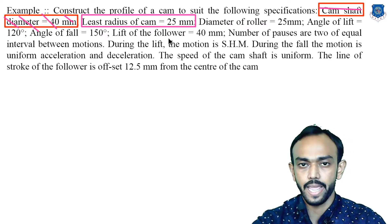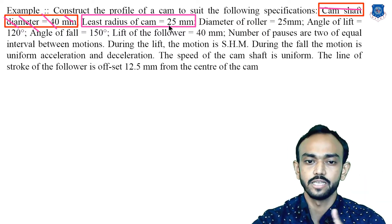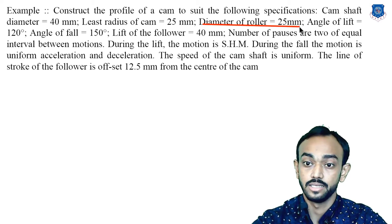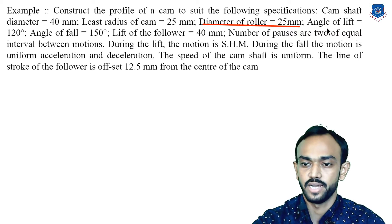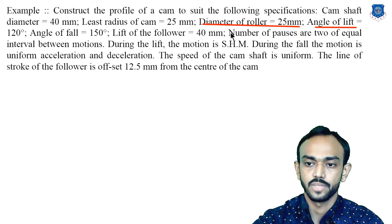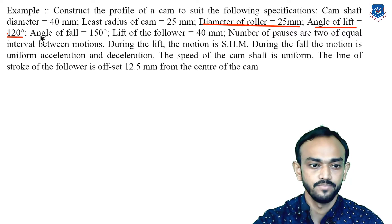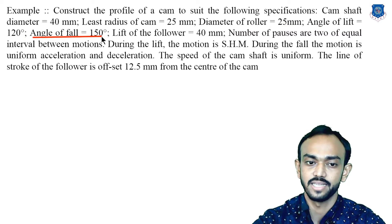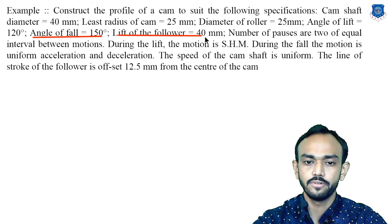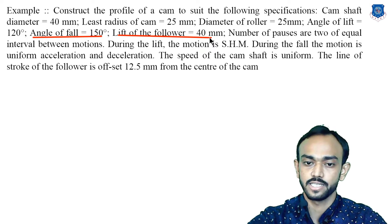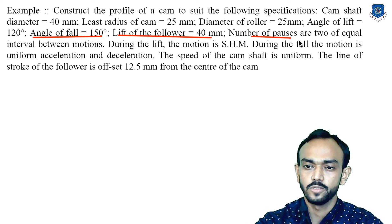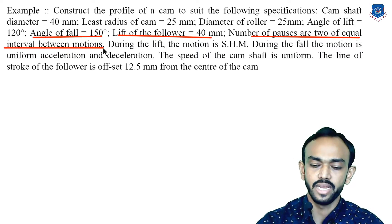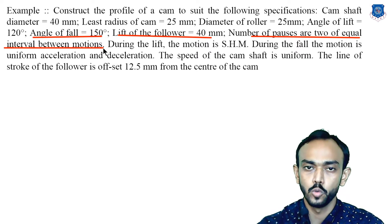We make the cam profile on the least radius of cam. The roller diameter is 25, so radius will be 12.5. The angle of lift theta-1 is 120°. The angle of fall — or angle of return — is 150°. The lift of follower, or stroke, is given as 40 mm.